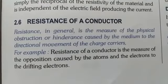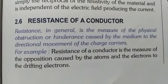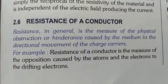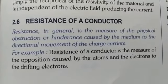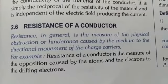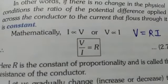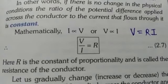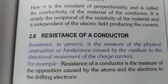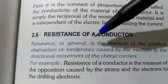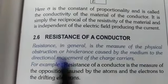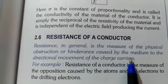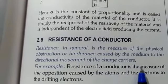In part 1 of today's lecture we discussed Ohm's law. As we go further, we find one important concept — resistance. In Ohm's law we got a proportionality constant R which we called resistance. Now I am going to tell you why it is called resistance. Resistance in general is the measure of the physical obstruction or hindrance caused by the medium to the directional movement of the charge carriers.